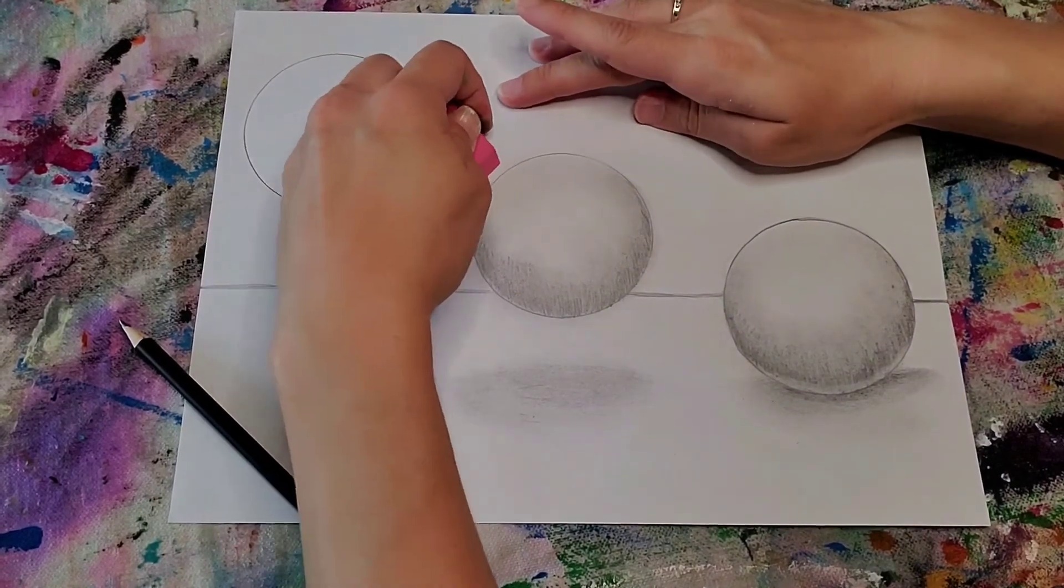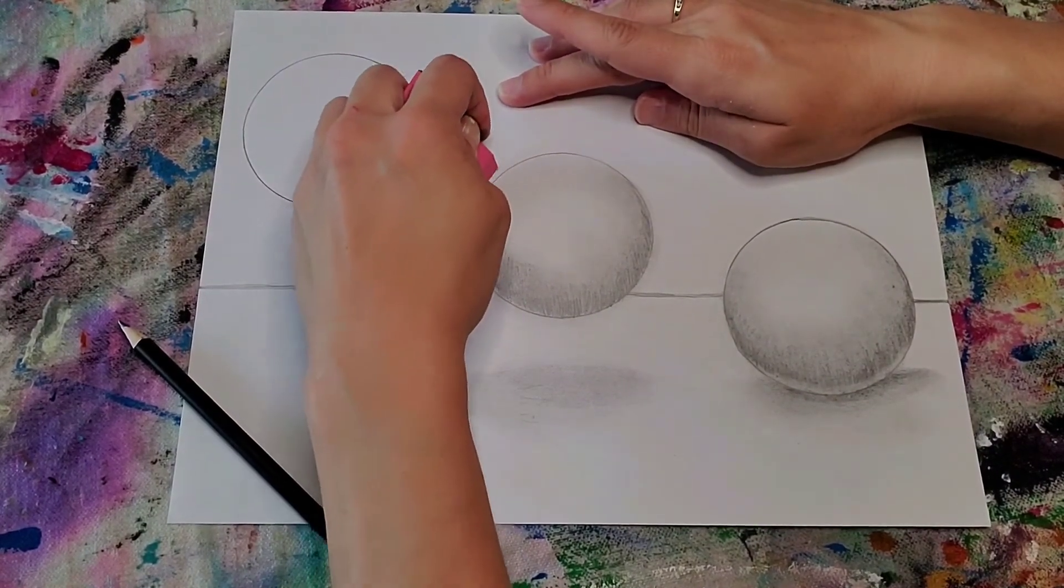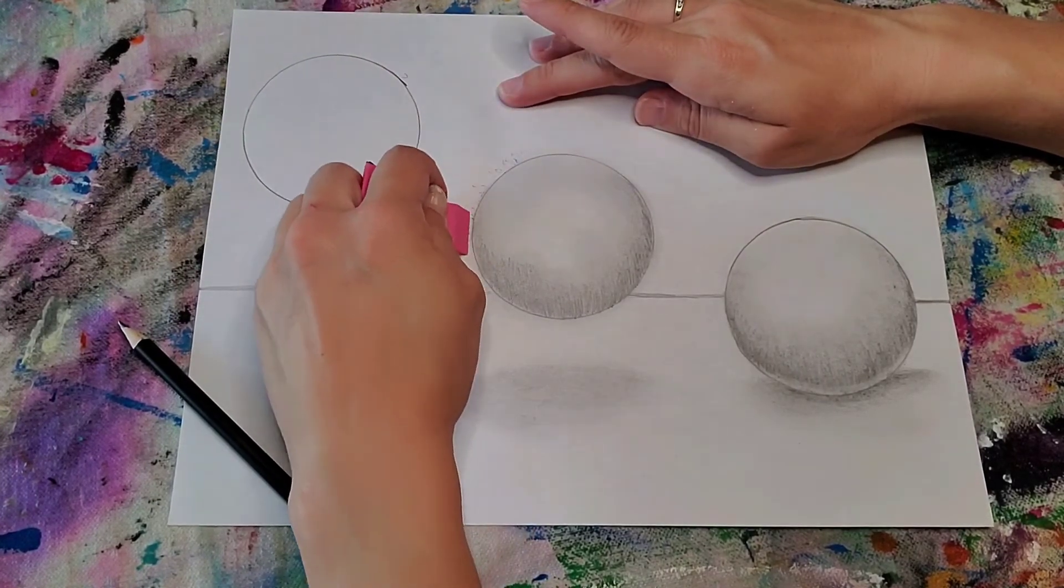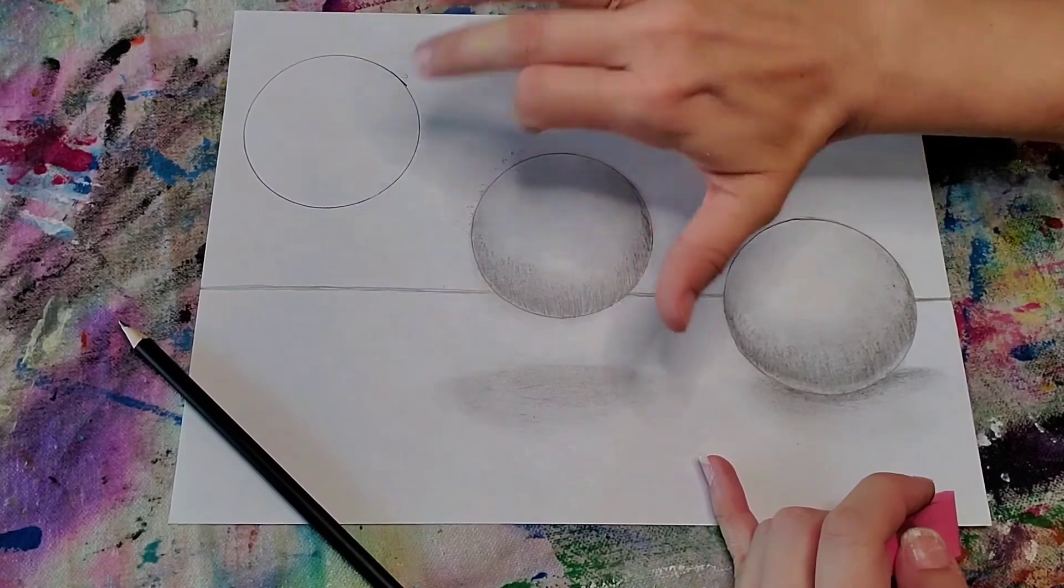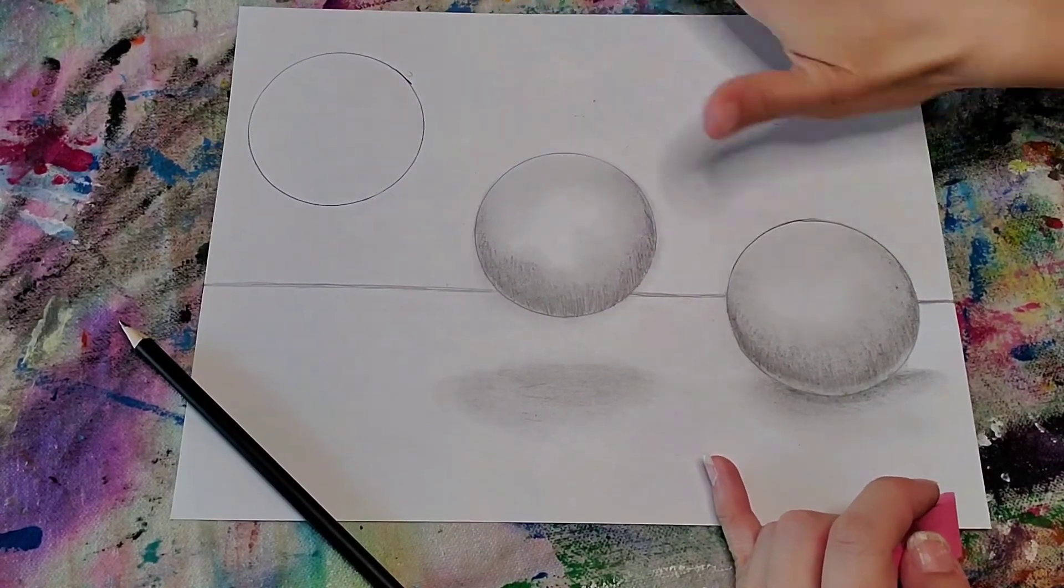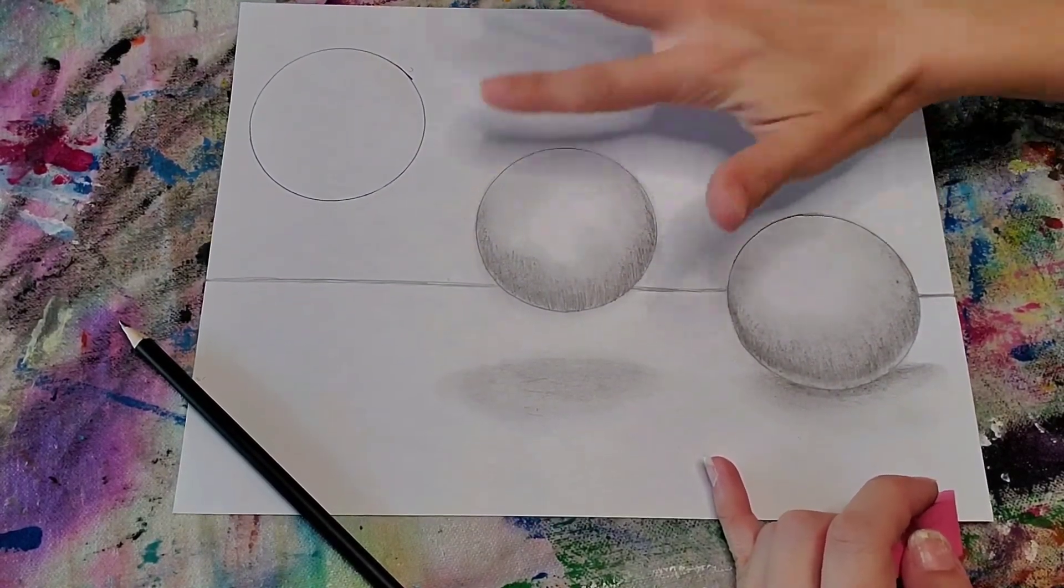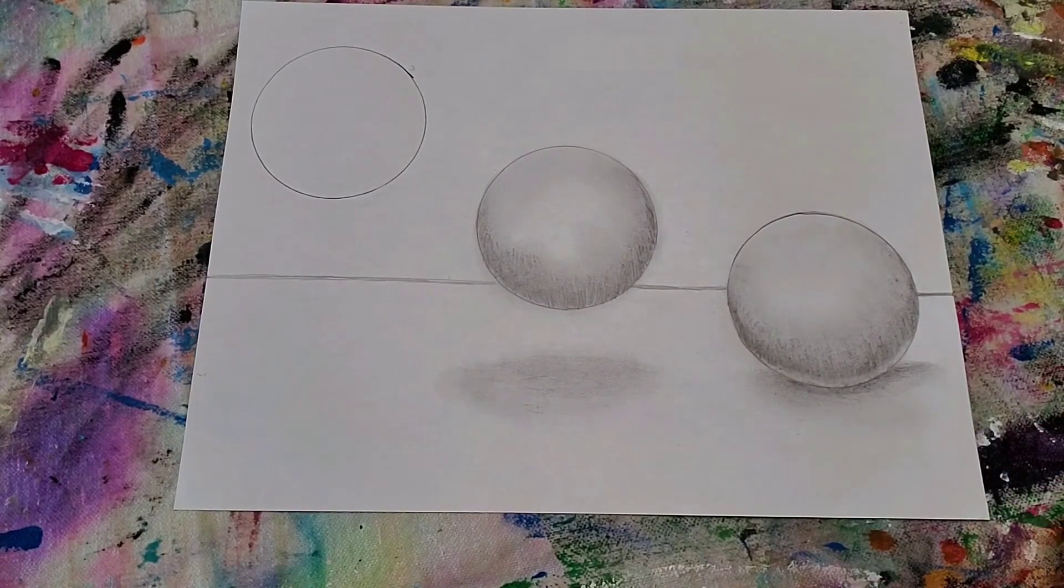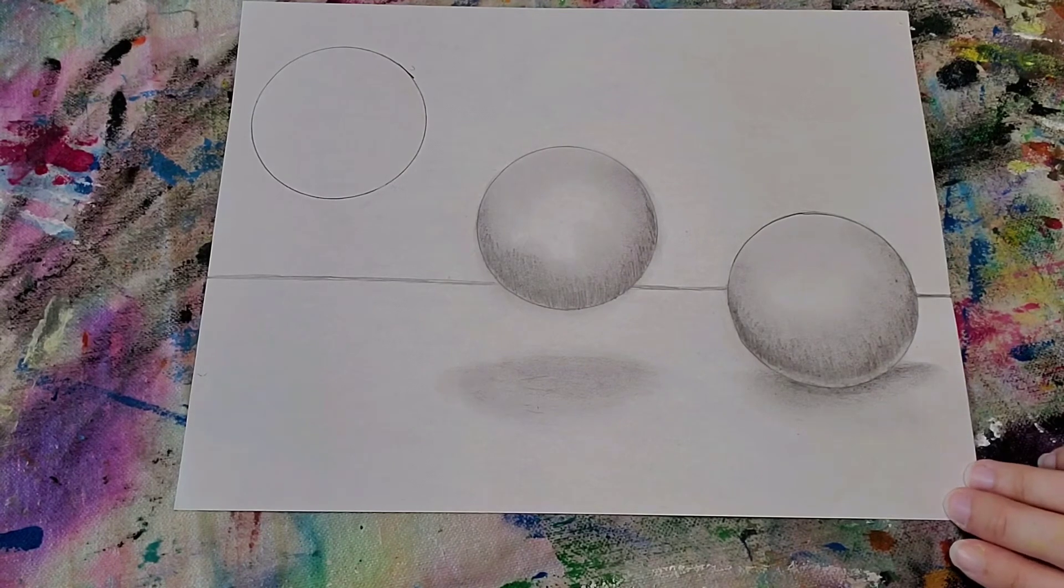And again, with my eraser, I'm going to just erase anything that's smudged outside of the circle. Be careful. Okay, and then our last circle.